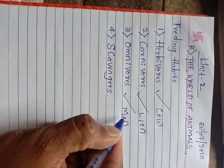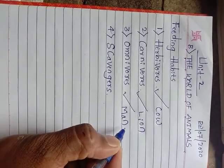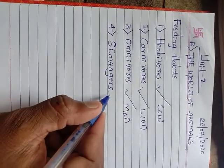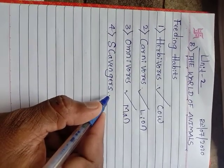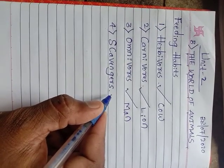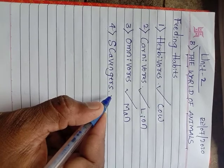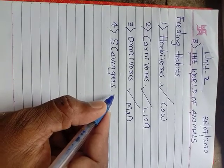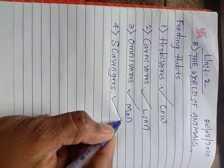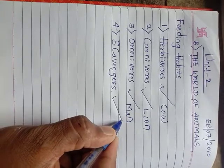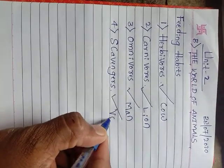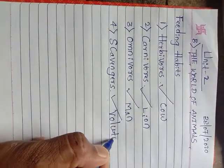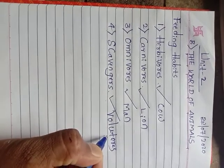Omnivorous means the animals that eat both plants as well as animals. For example, man — we are eating both plants and animals. And fourth one, scavenger — some animals like vulture and hyena eat dead animals. They are called scavengers.